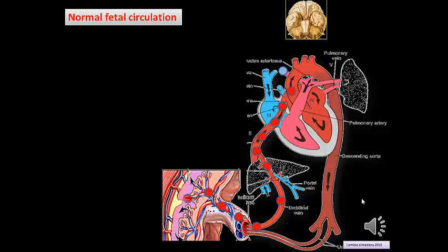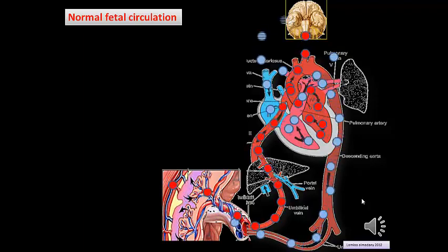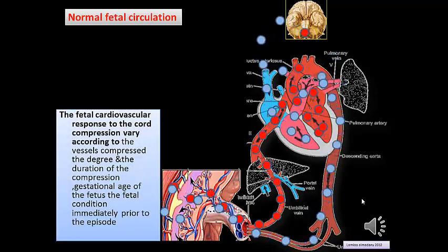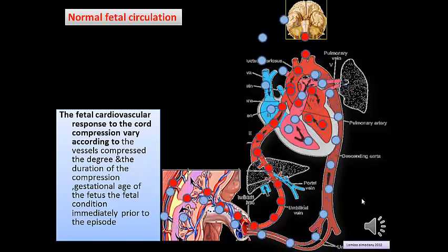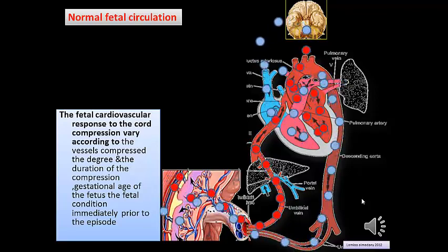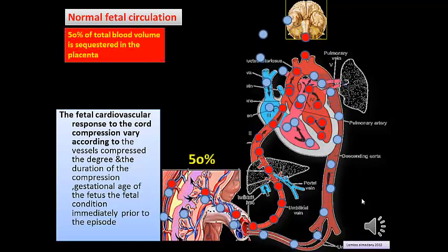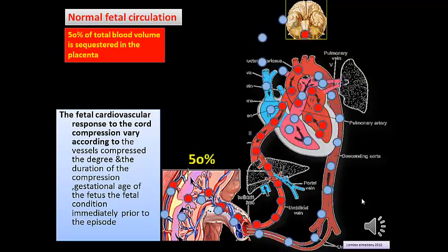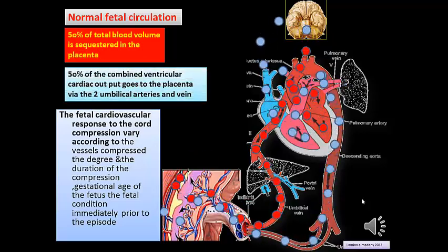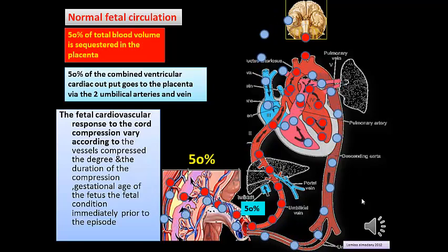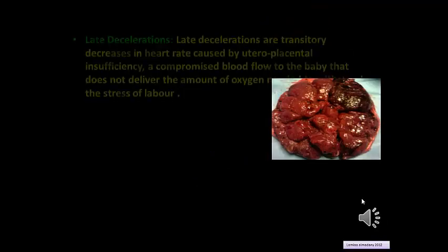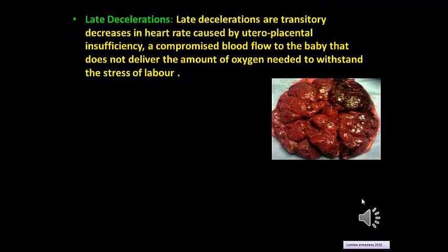To understand why variable decelerations occur, we must remember normal fetal circulation. The cardiovascular response to cord compression varies according to the vessels compressed, the degree and duration of compression, gestational age, and the condition immediately prior to the episode. 50% of total blood volume is sequestered in the placenta and 50% of combined ventricular cardiac output goes to the placenta. Late decelerations are transitory decreases in heart rate caused by uteroplacental insufficiency — compromised blood flow that doesn't deliver sufficient oxygen to withstand the stress of labor.